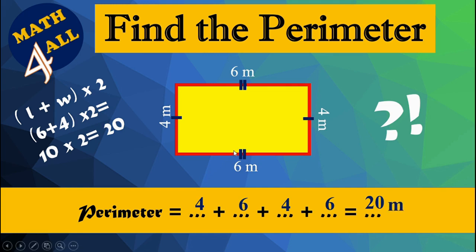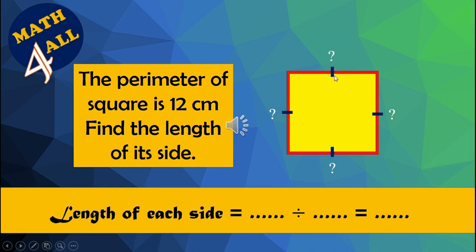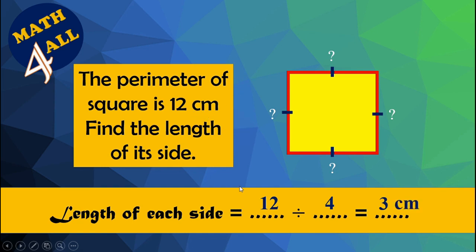The perimeter of this square is 12 centimeters — find the length of its sides. In a square, all four sides are equal. So you divide 12 by four, which gives you three. The length of each side equals three centimeters.